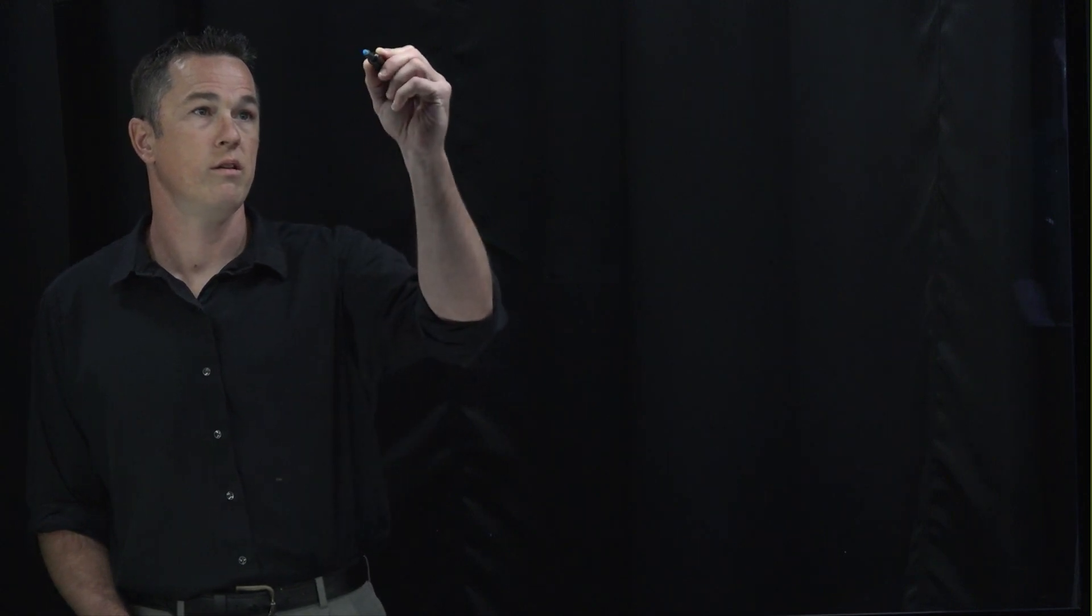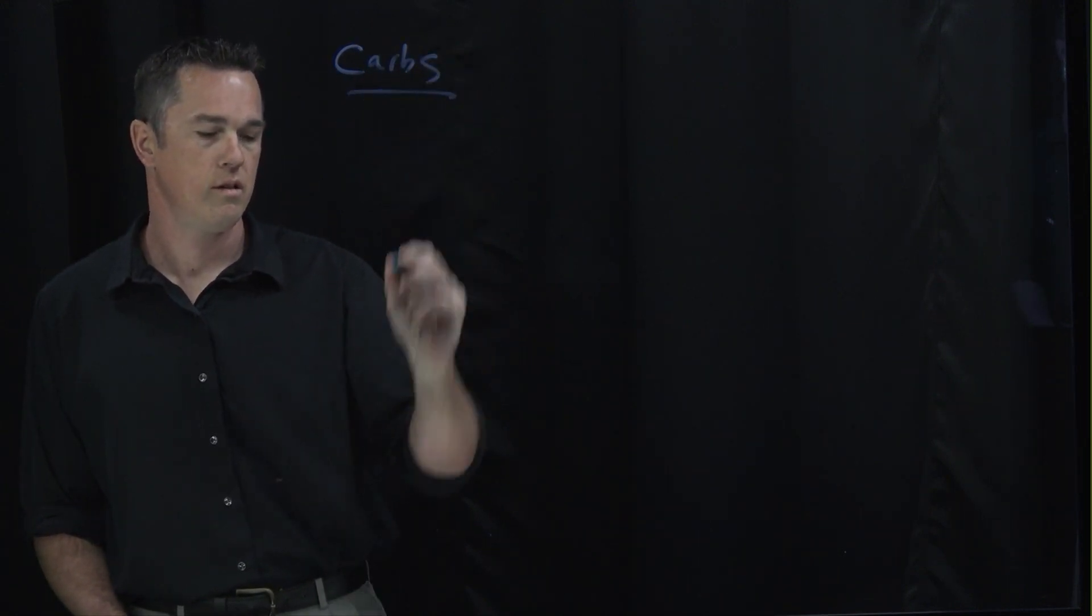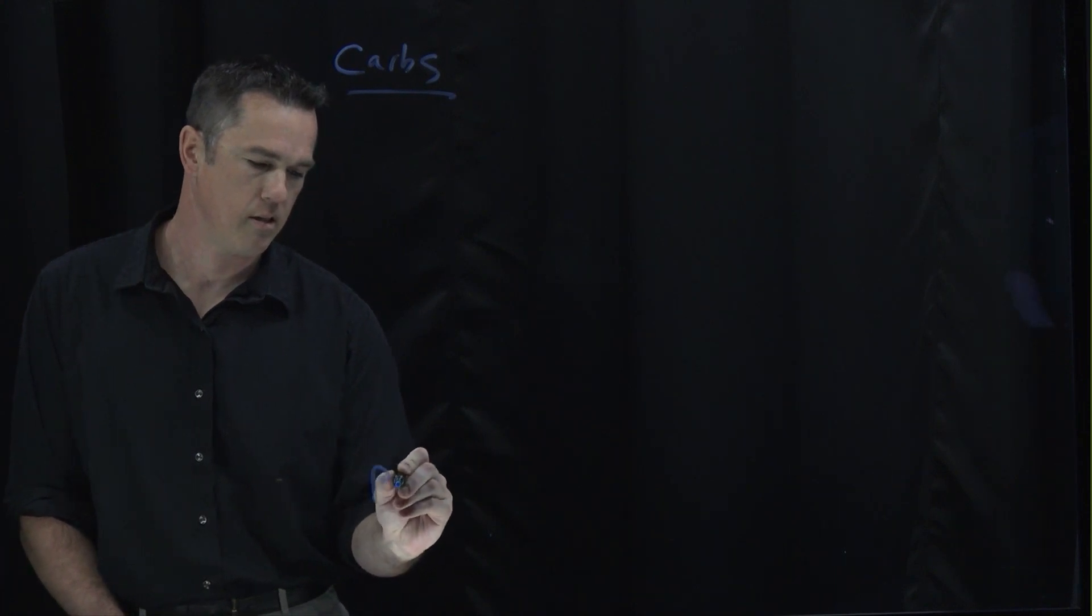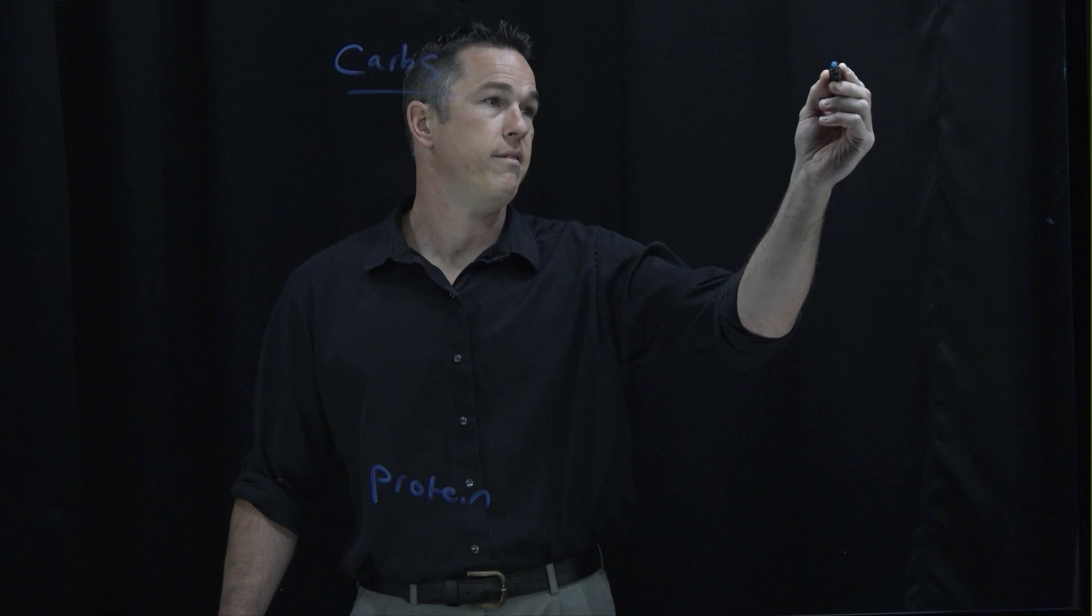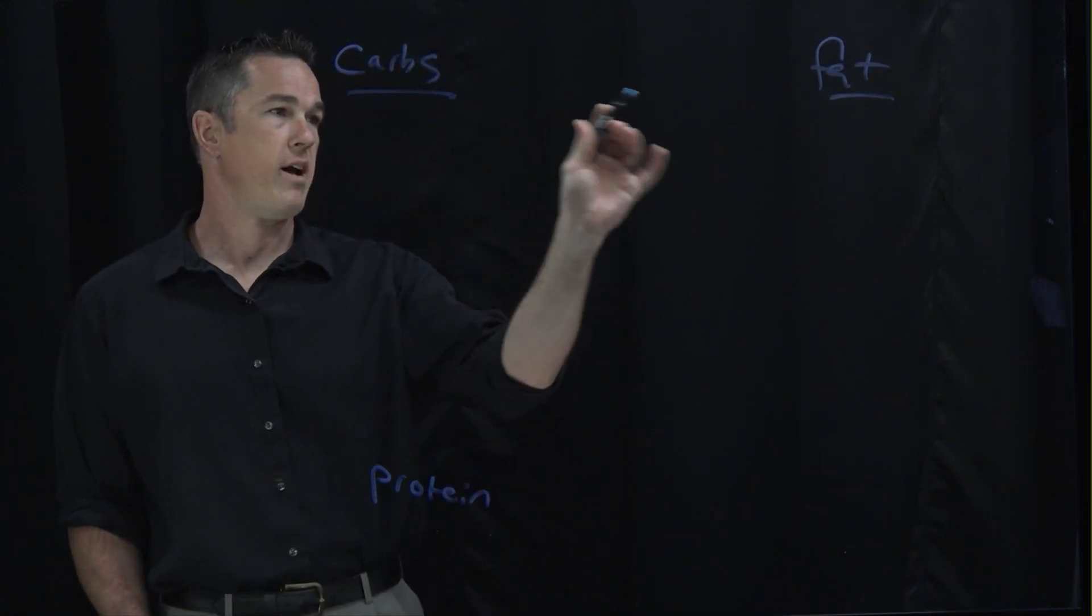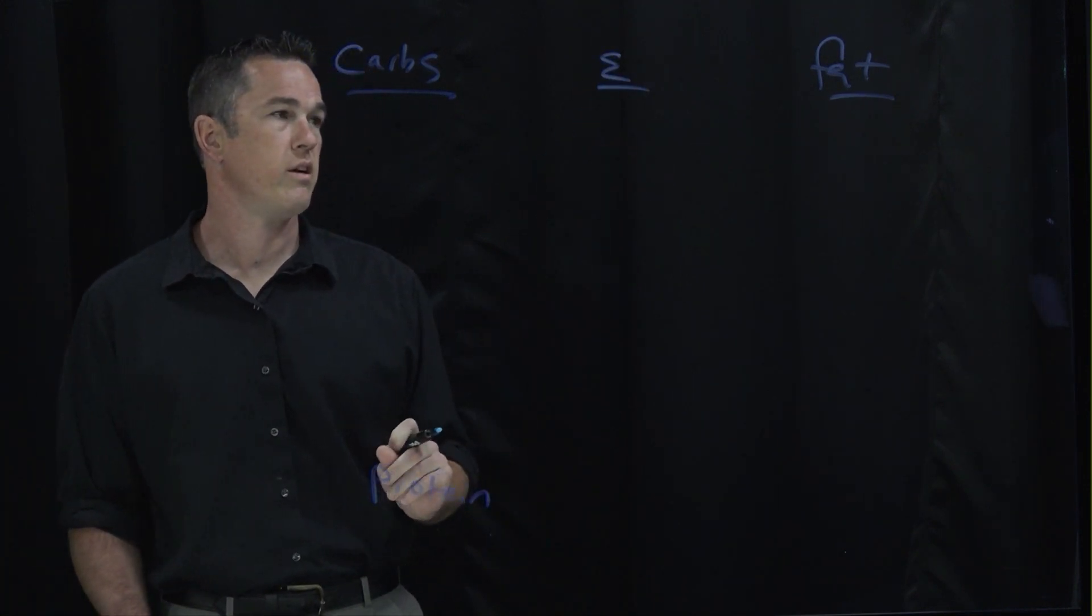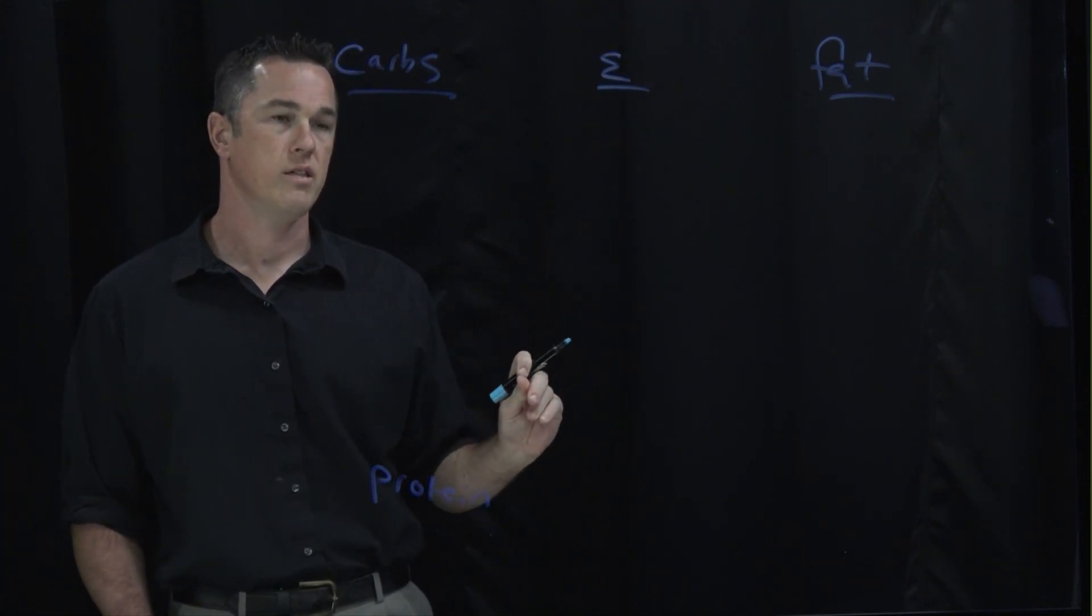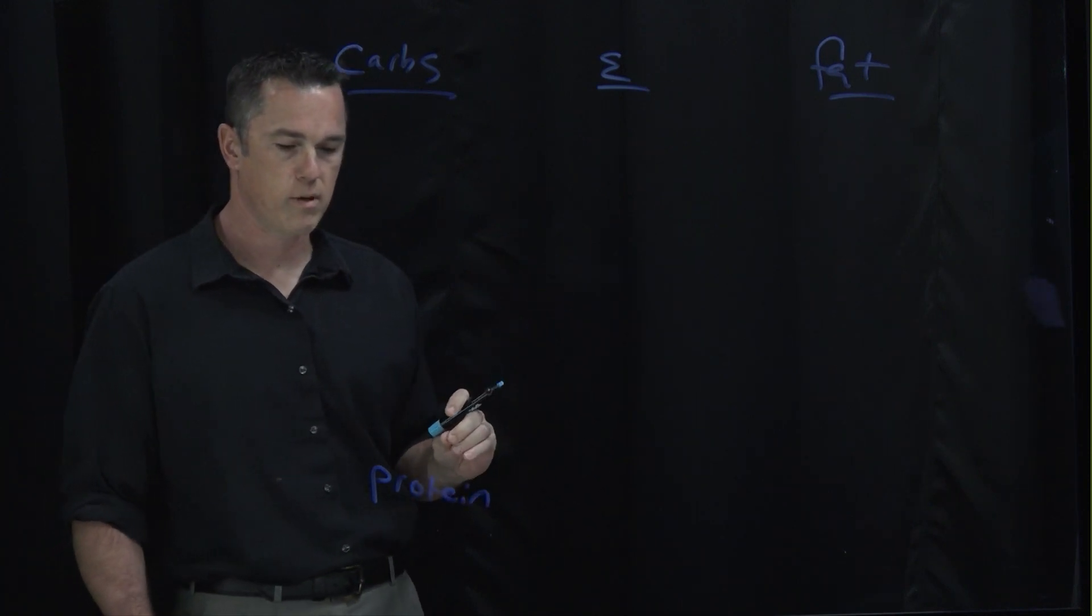And so the first thing we need to talk about are the three macronutrients. We have carbohydrates, we have protein, and we have fat. Now carbs and fat are basically just energy. E stands for energy. Energy is just empty calories. We need energy to function and to perform our body's processes.